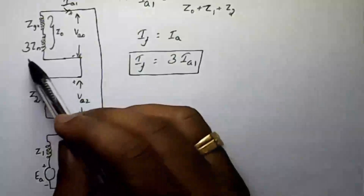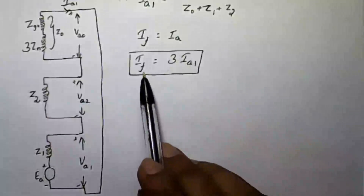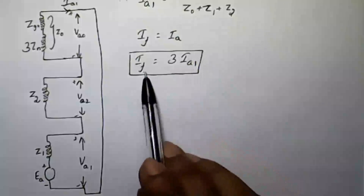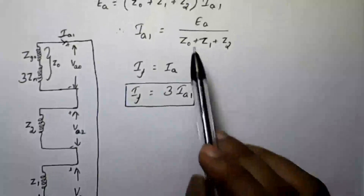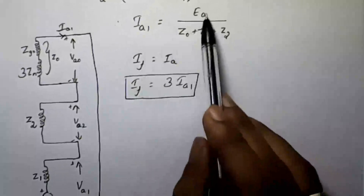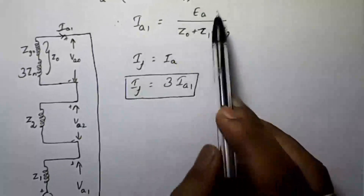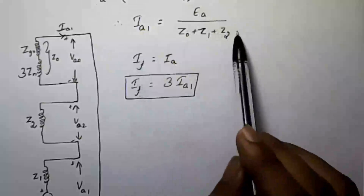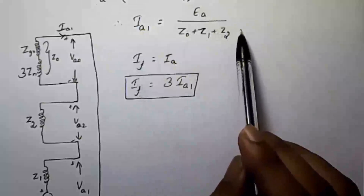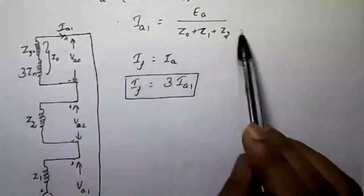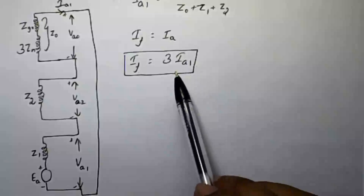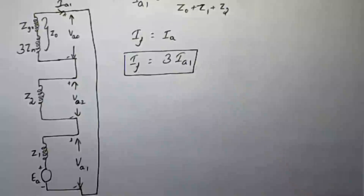This sequence network is also important. The fault current can be easily calculated using IF = 3×Ia1. If any one sequence current value is known, multiply it by 3 to get the fault current. Alternatively, if the sequence impedance values are given, use Ia1 = Ea / (Z0 + Z1 + Z2), where Ea is the pre-fault voltage, normally taken as 1 per unit. If a neutral impedance Zn is given, add 3×Zn to the zero sequence impedance. Thank you.